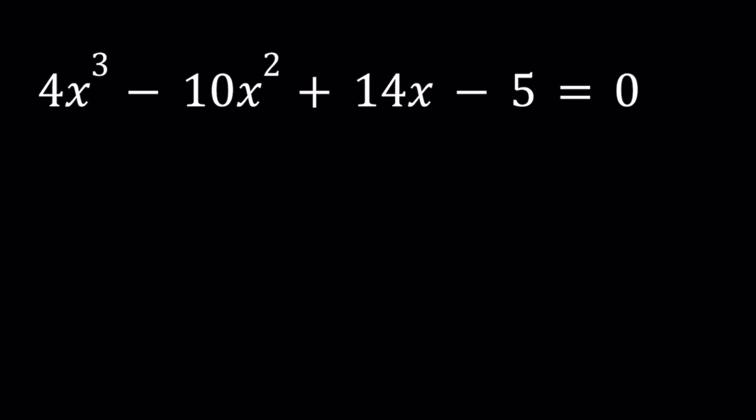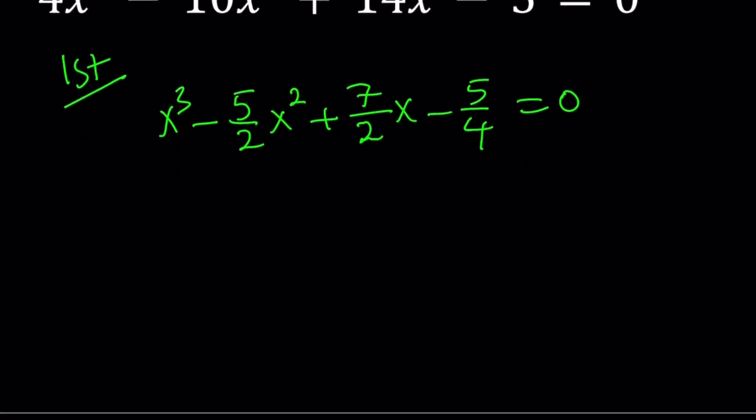So for this problem, first of all, we could use the cubic formula, right? Let me go ahead and divide both sides by 4 first. So we get x cubed minus 5 over 2x squared plus 7 over 2x minus 5 over 4 equals 0. To be able to use the cubic formula, I'm going to get rid of x squared. So let's go ahead and set x equals y plus 5 over 6.